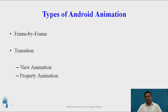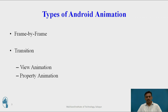The types of Android animations are: first is frame-by-frame, and second is transition. Within transition, there are two types of animations: view animation and property animation.